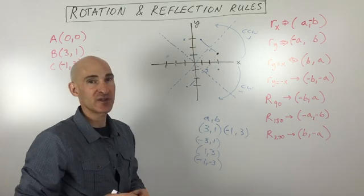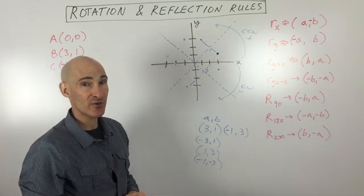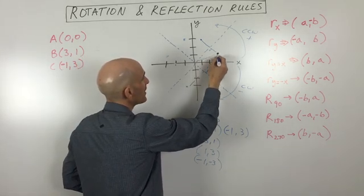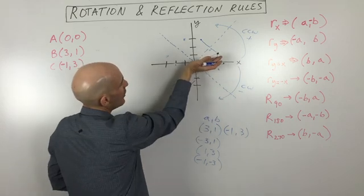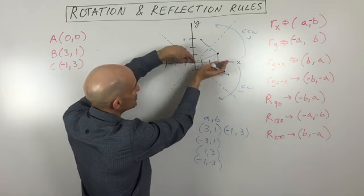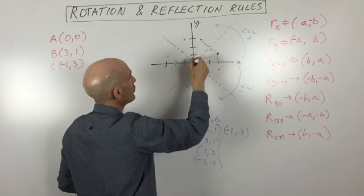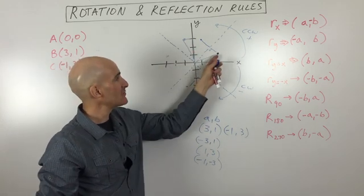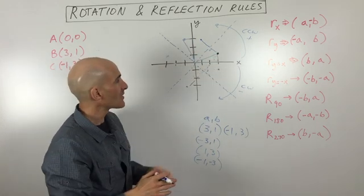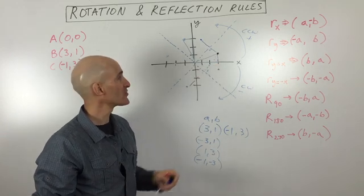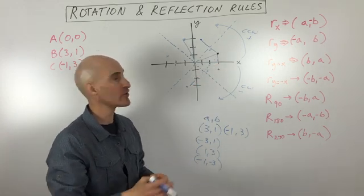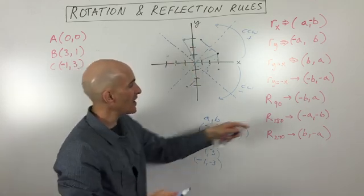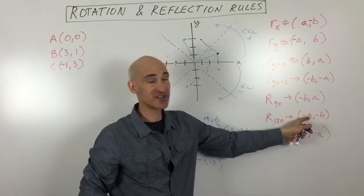At the beginning of the video I mentioned ways to remember these formulas in case you forget. What I usually do is draw a triangle and think about pivoting it at the origin — rotating the triangle. Take a simple example like (3, 1); make sure the coordinates aren't the same so you can clearly see what happens. You can see the new triangle and where the point ends up after rotation.